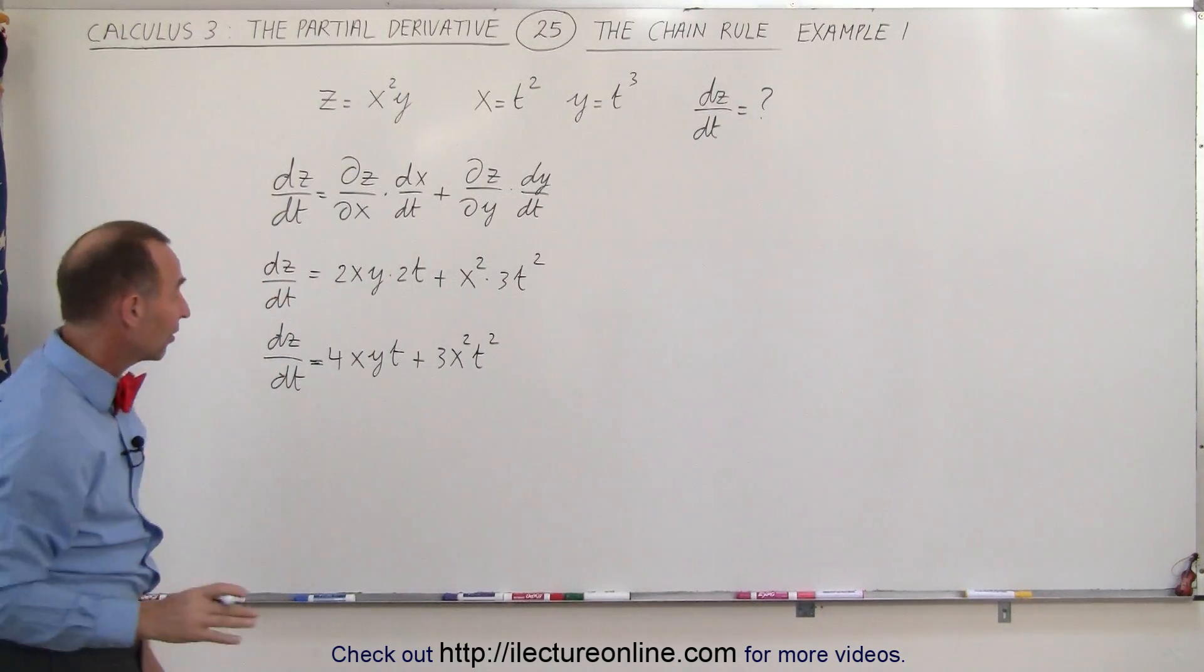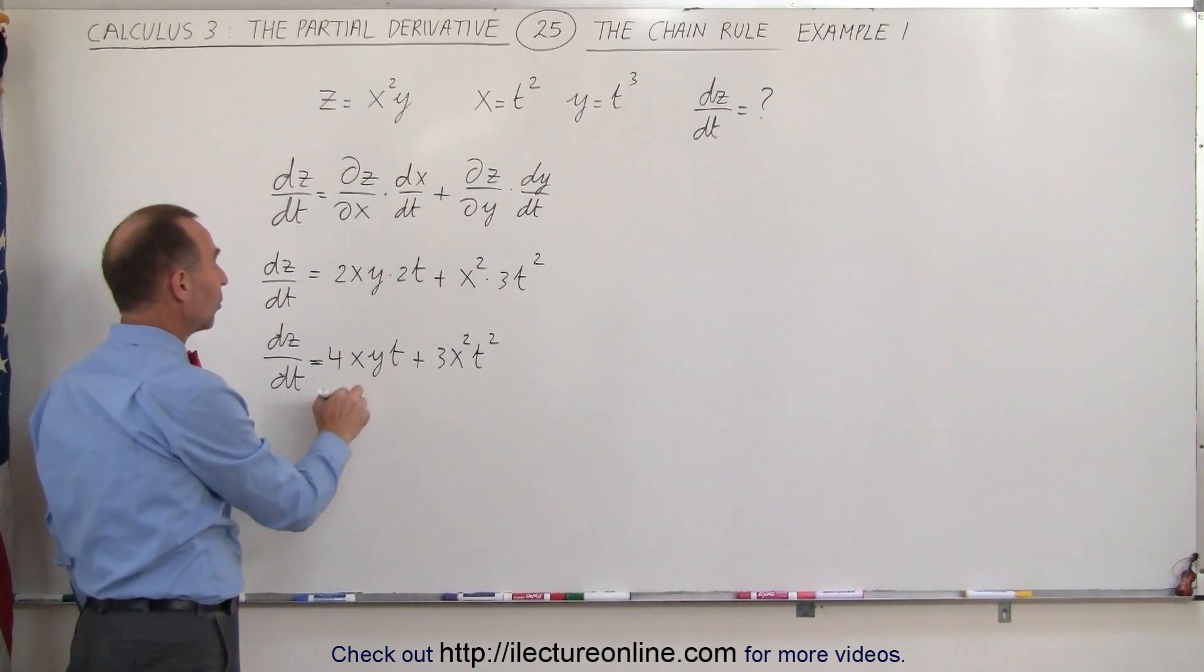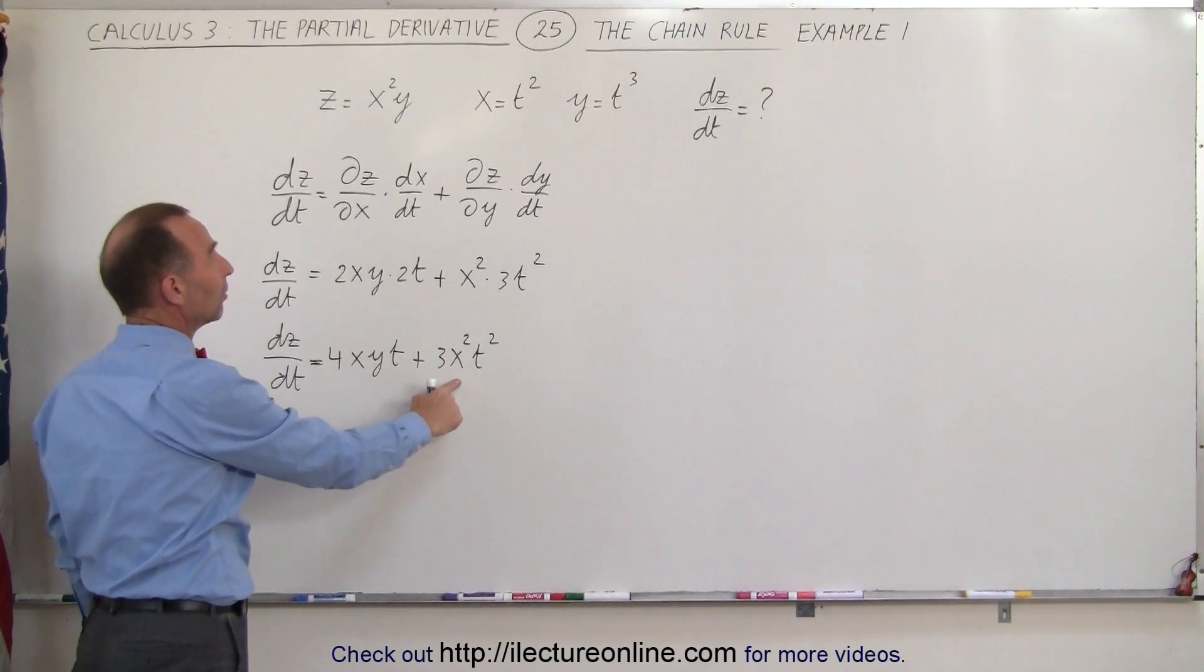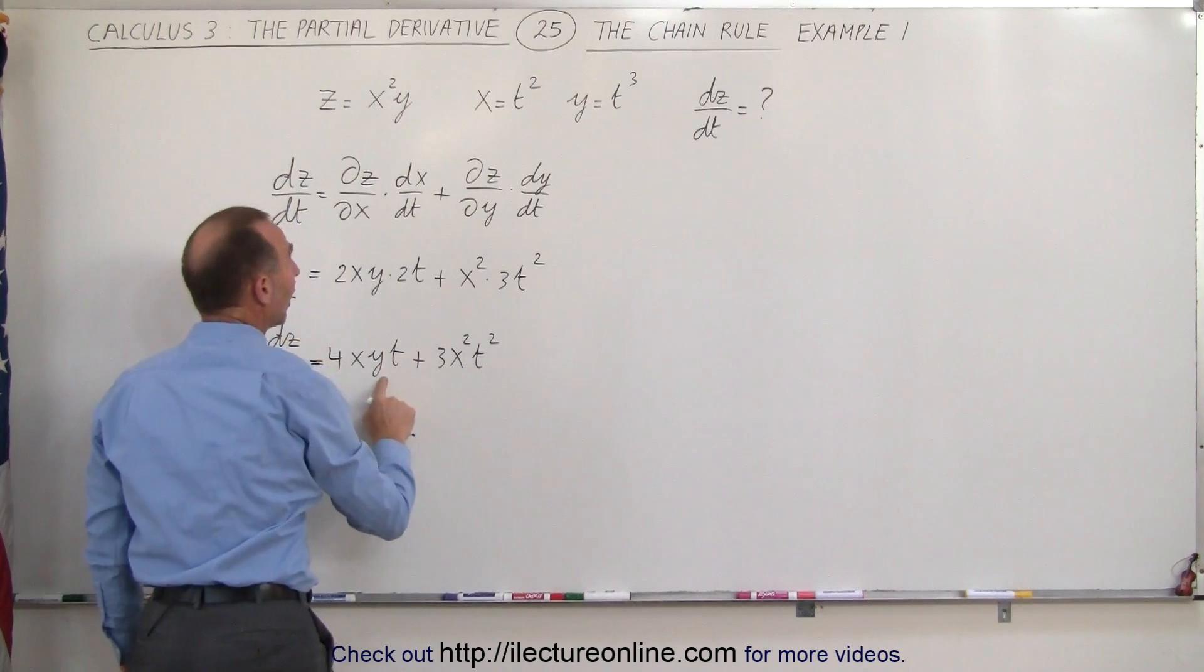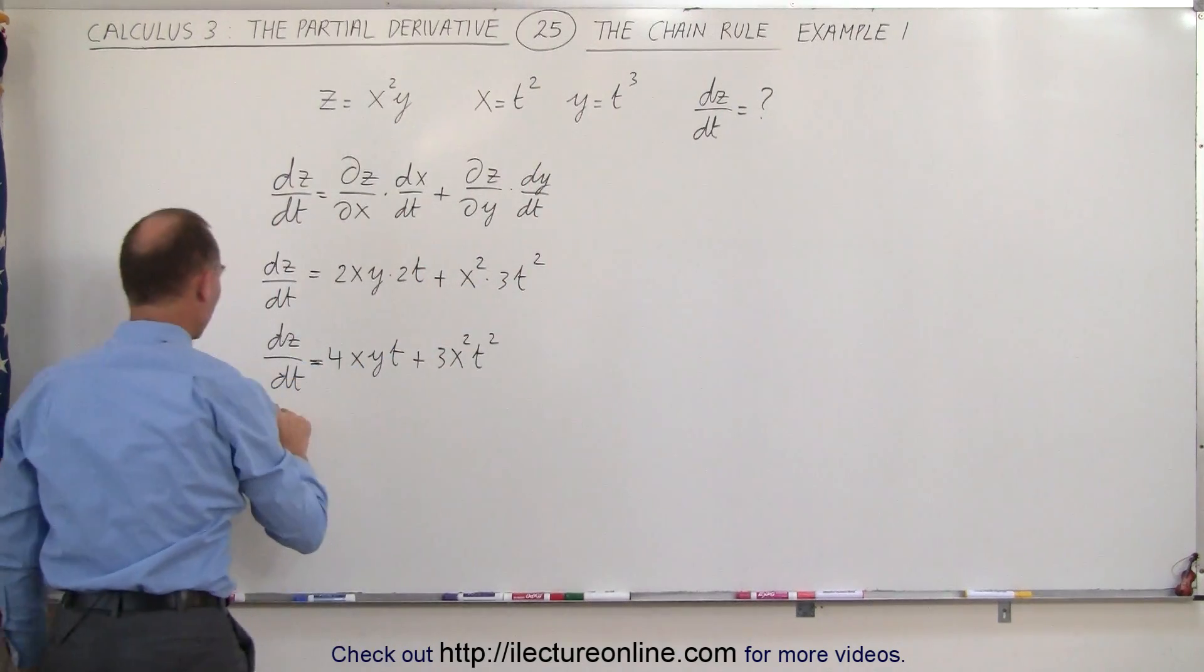Now since we want to express that in terms of t, let's replace x and y here and x squared here by what that's equal to. Since x is equal to t squared and y is equal to t cubed, this can now be written as follows.